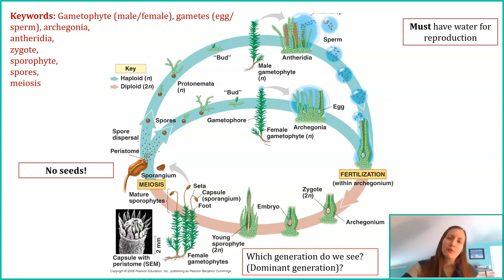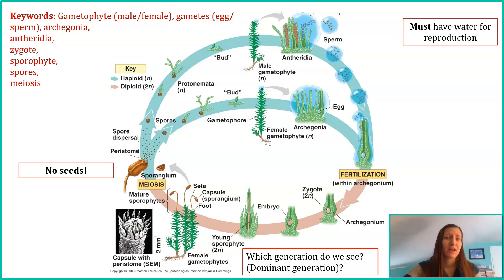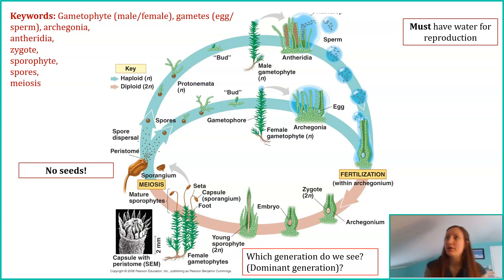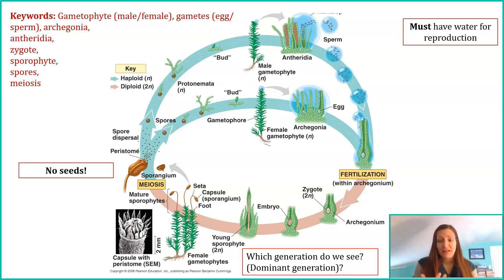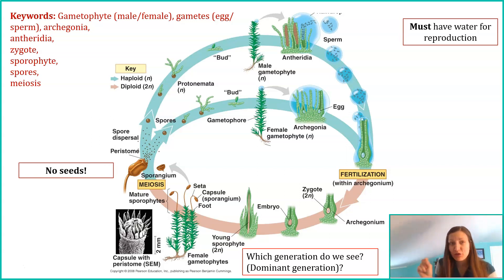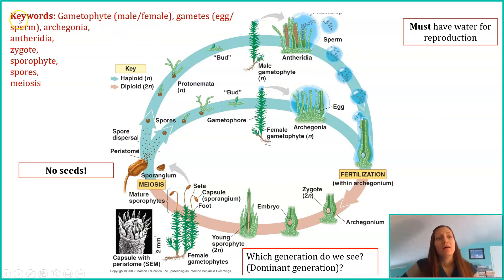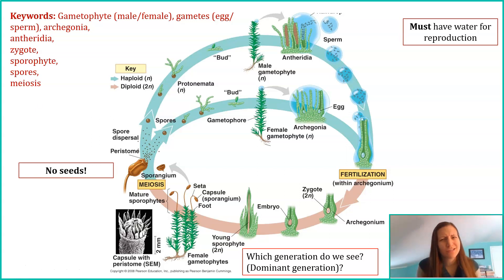On tests, quizzes, or assignments, I will not leave you in the dark. I won't just ask 'describe the moss life cycle' with no help. Instead, I'll say: describe the moss life cycle — be sure to include the words gametophyte, the male and female, the gametes (egg and sperm), archegonia, antheridia, zygotes, sporophytes, spores, and meiosis. So I will give you the key words to help jog your memory.